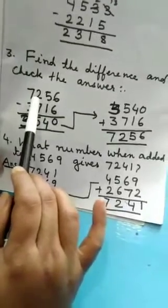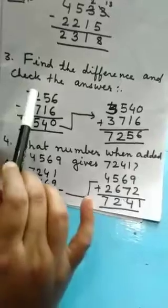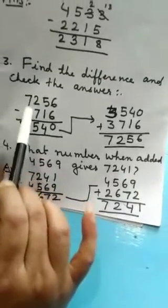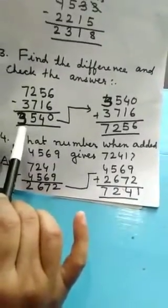12 minus 7, 5. 7 will become your 6. 6 minus 3 is 3. This is 3. Okay.